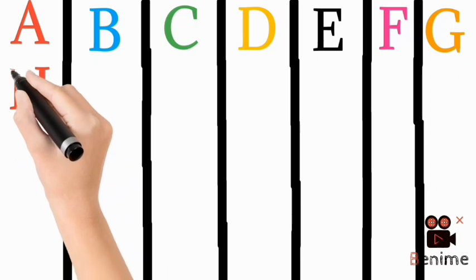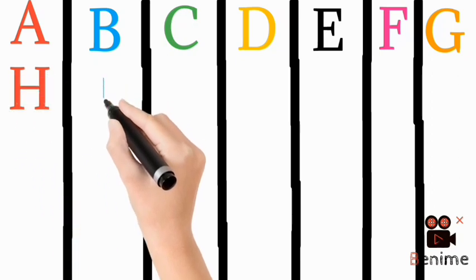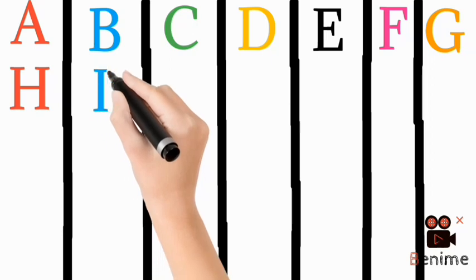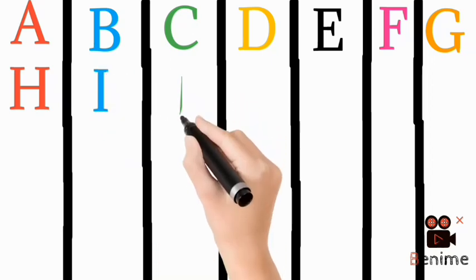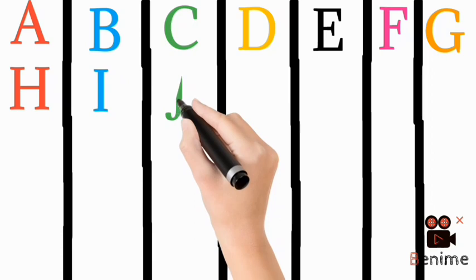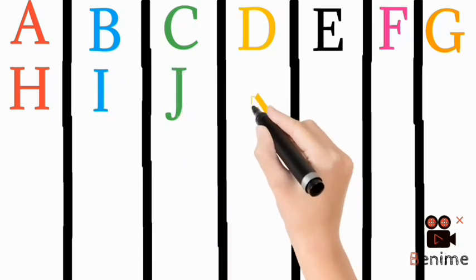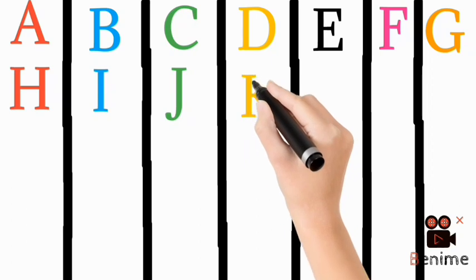Blue color I, I for ice cream. Green color J, J for joker. Yellow color K, K for kite.